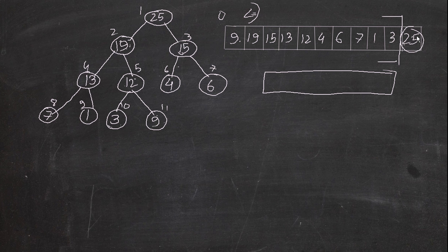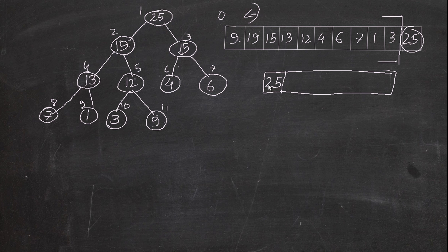It depends whether you want ascending or descending: if you want descending format, the extracted maximum goes into the first slot of a new array; if ascending, it goes into the last slot. A common misconception is that max-heap is only for descending and min-heap only for ascending — that's wrong. You can use both max and min heap for either order; it just depends on how you place the extracted element in the array.